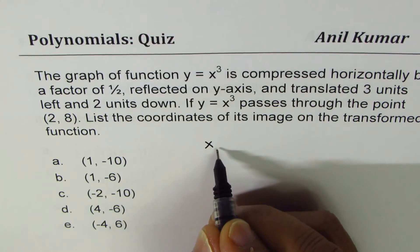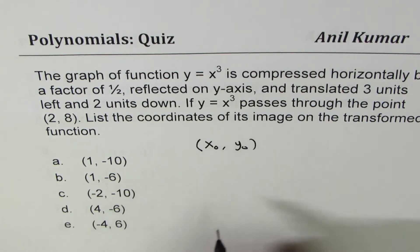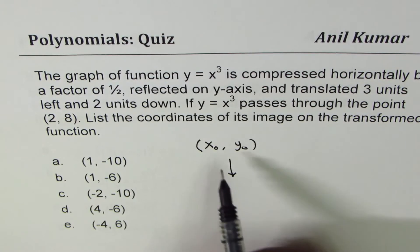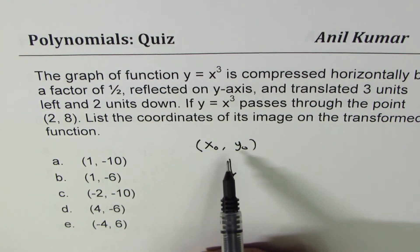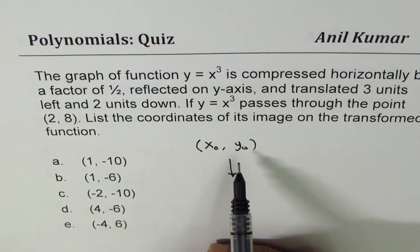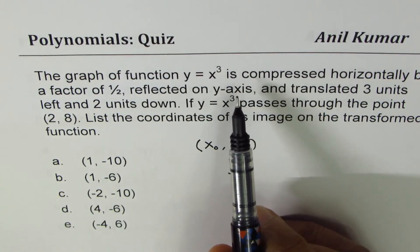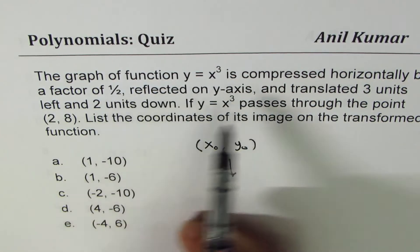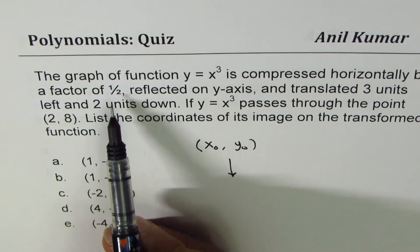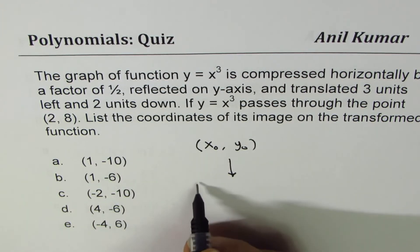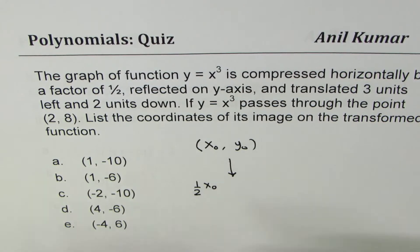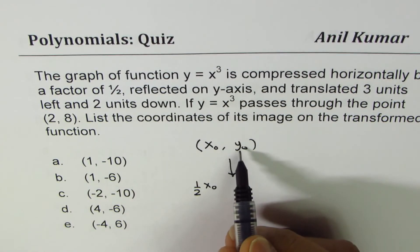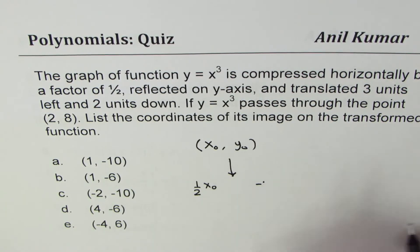We can directly write down the image points. Compressed horizontally by a factor of half affects the x value, so I'll write this as one-half of x₀. Reflected on the y-axis — let's think about what that means on the graph. If I reflect x cube on the y-axis, the points move to the other side, so the x values become negative.